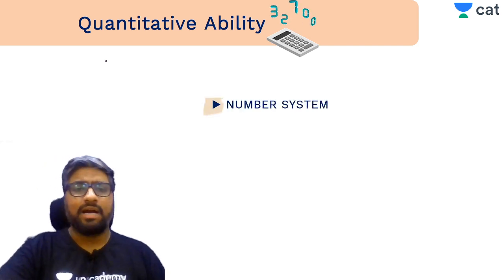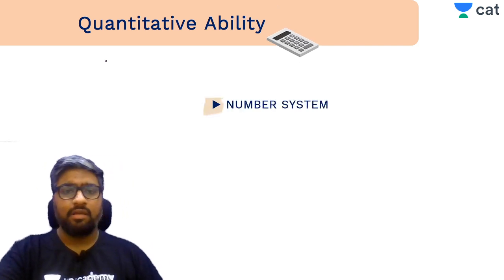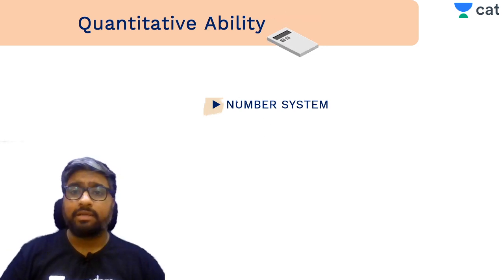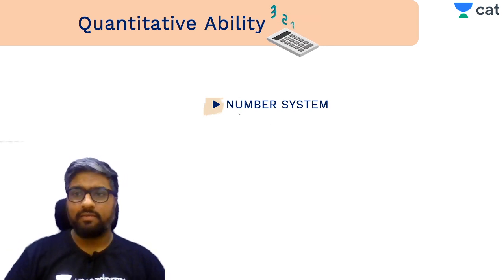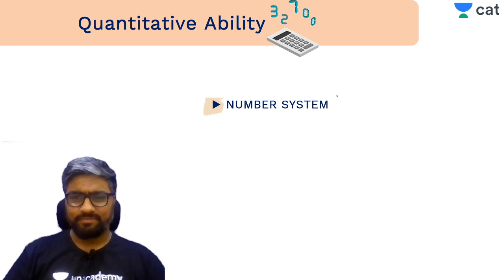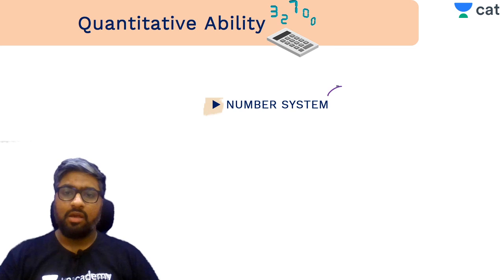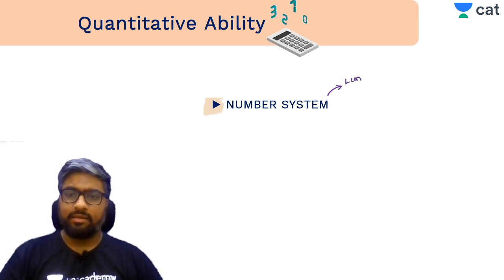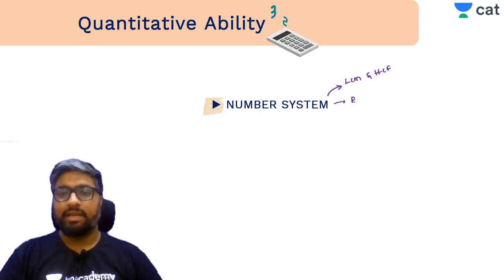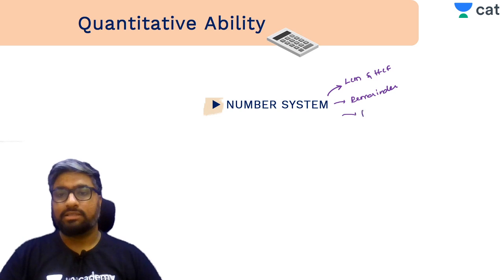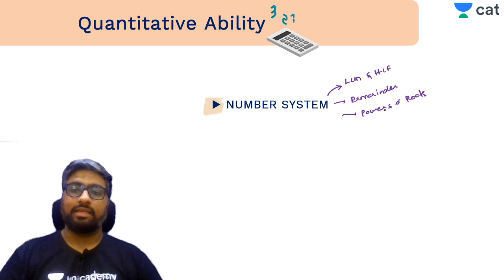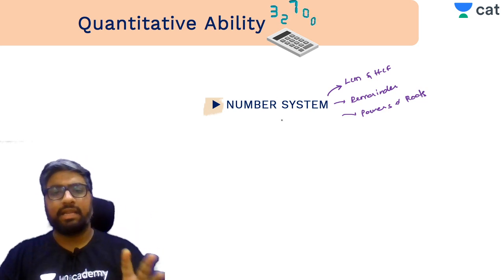Let me clear the air about the Quantitative Ability section. There are five concept areas. The first is the Number System — an area of mathematics where concepts like LCM, HCF, remainders, powers, and roots are covered. I'll give you everything in detail.